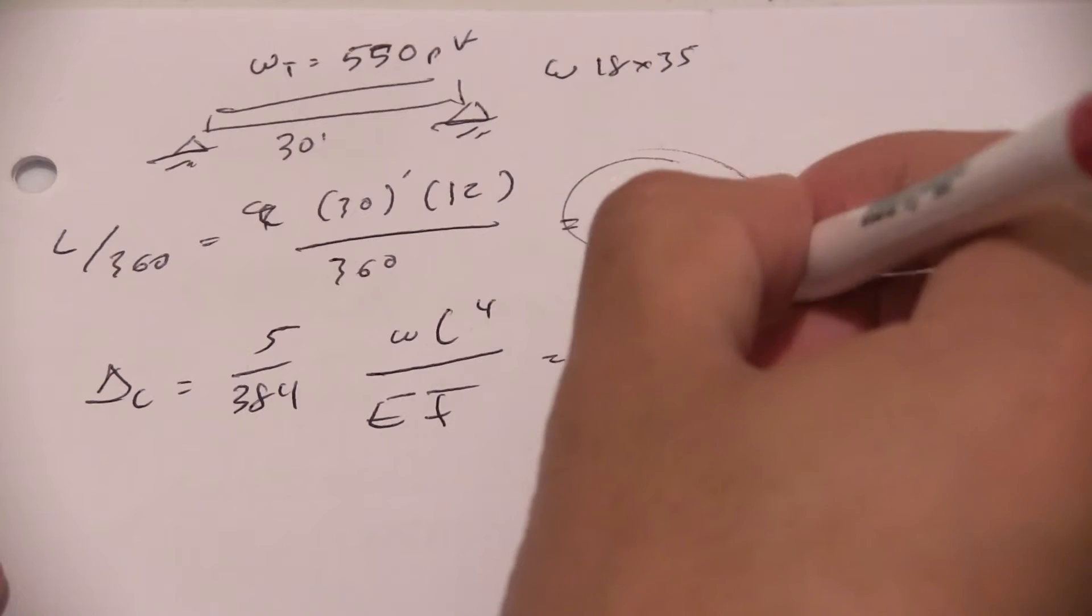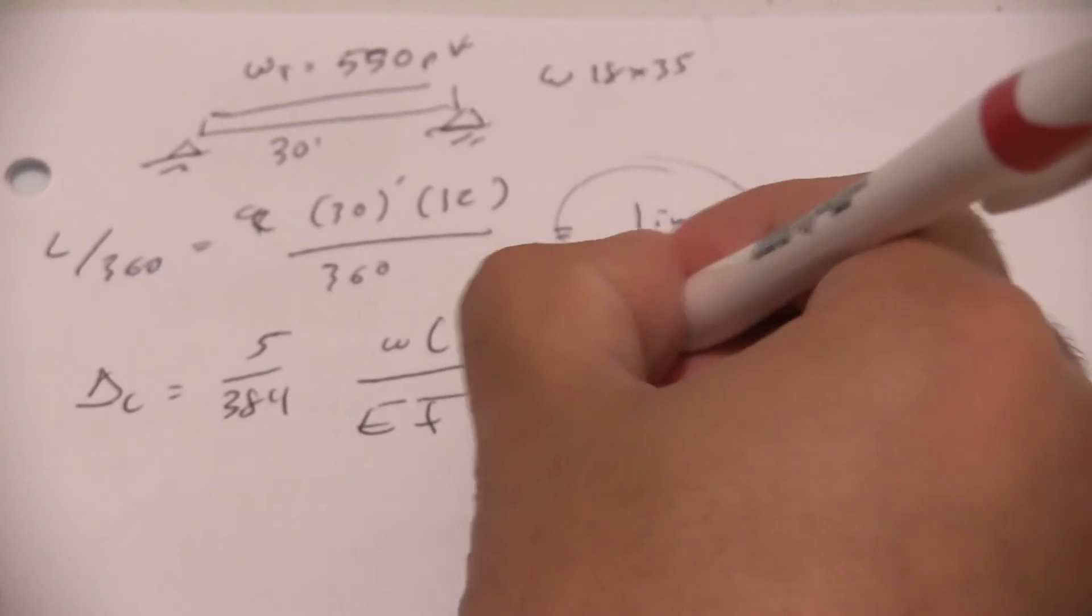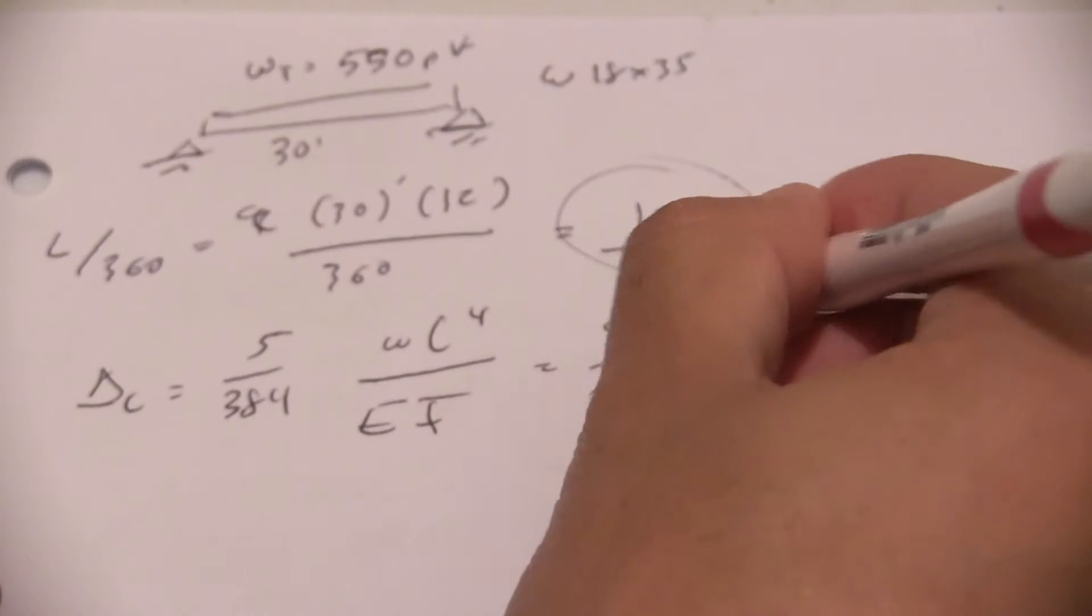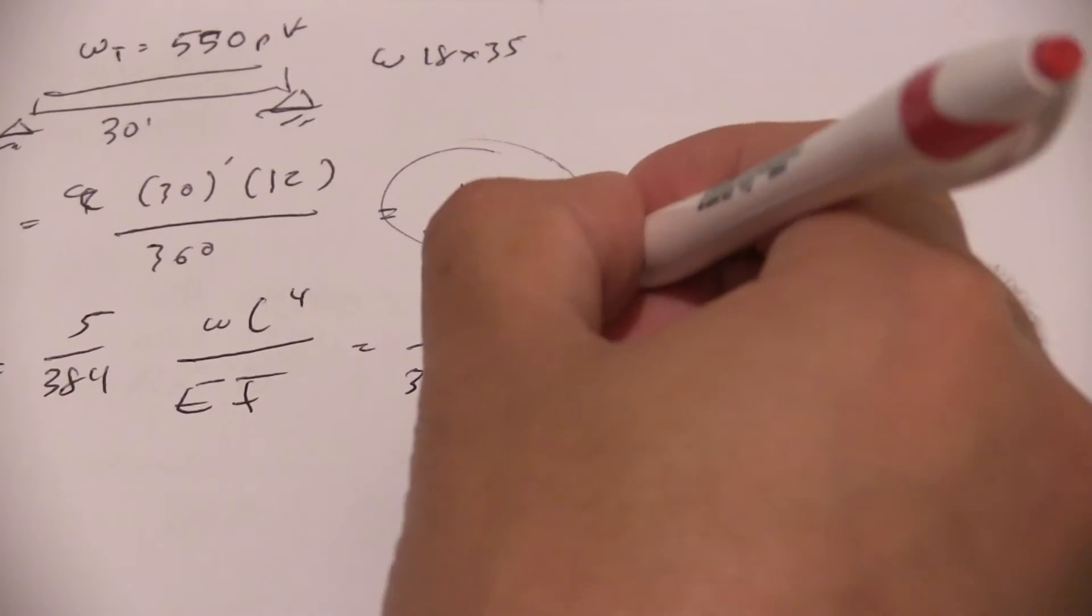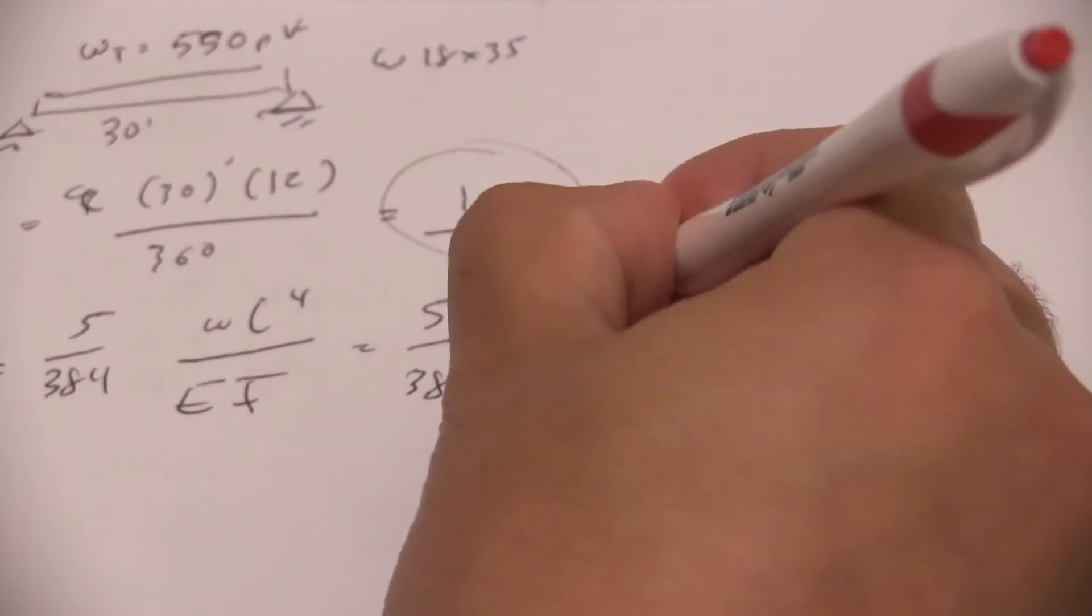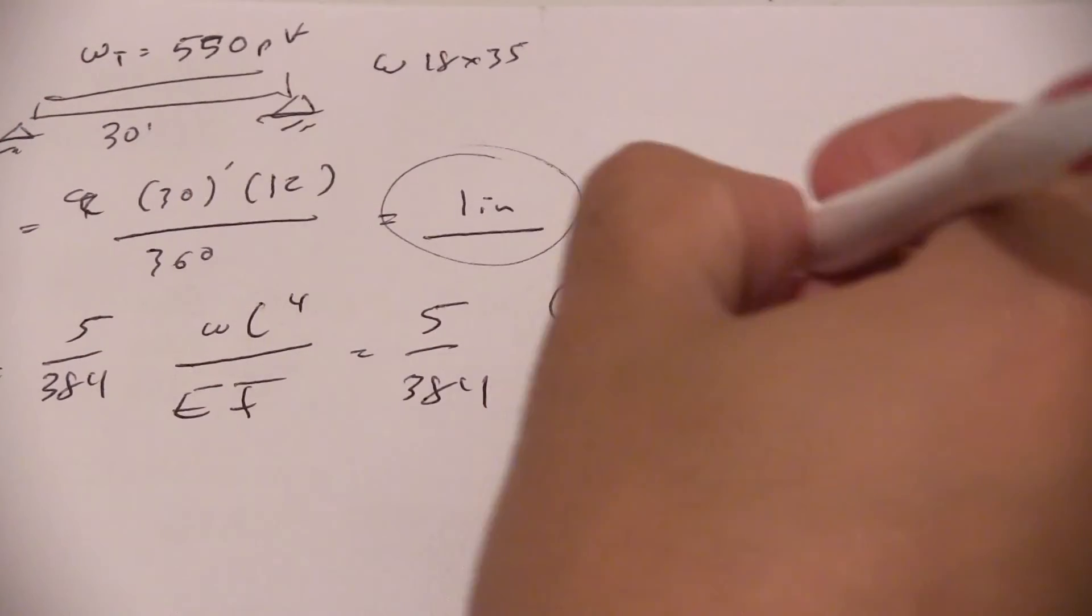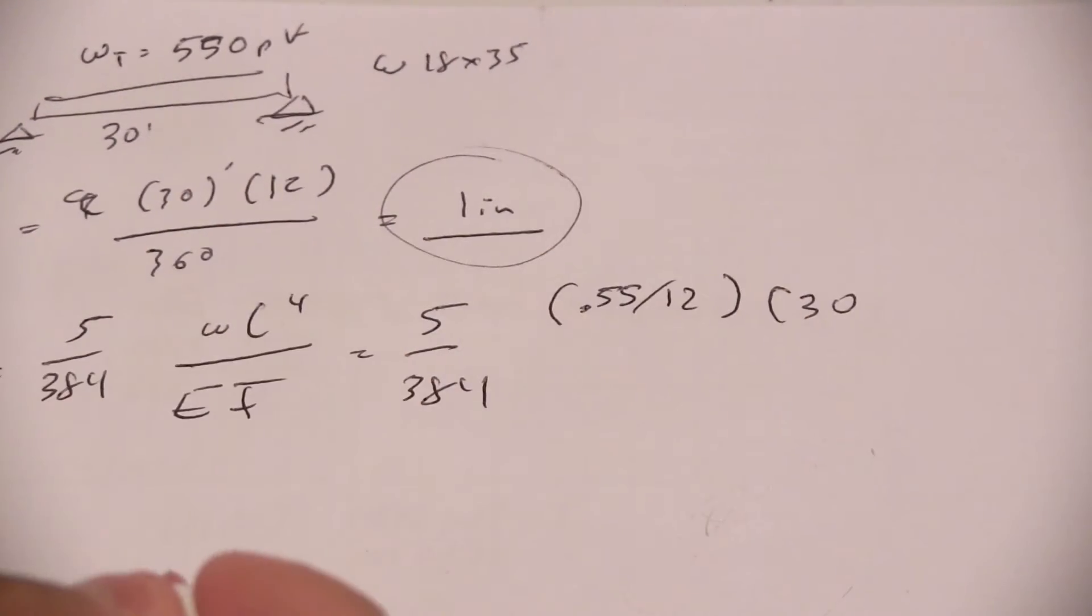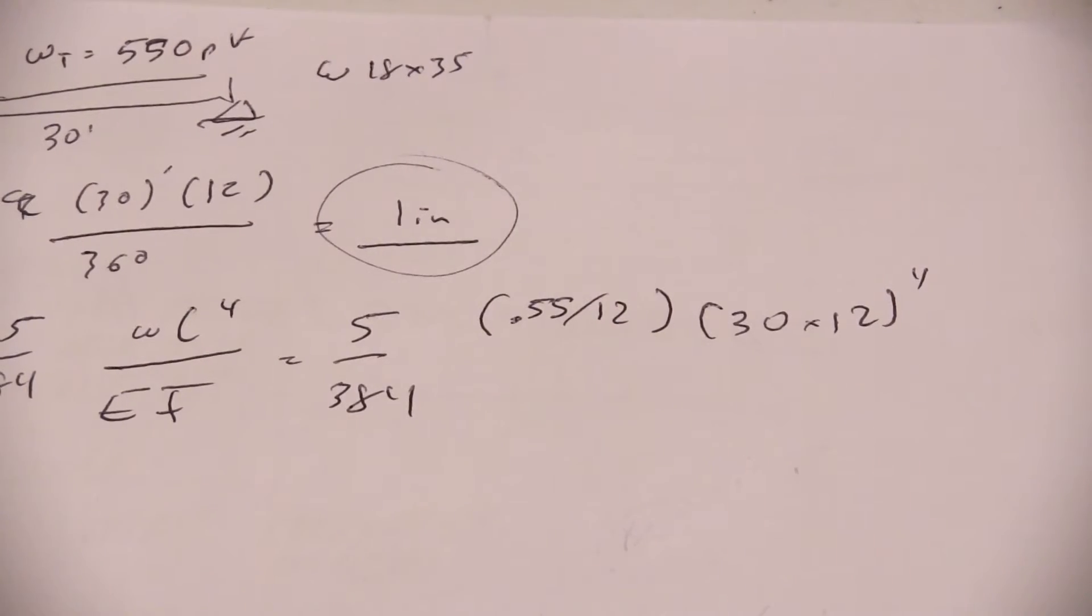Now our W, we are going to convert it into kips. It will be 5 over 384 times 0.55 kips, we're going to divide it by 12 to make it into inches, we're going to multiply it by the length 30, we're going to multiply it by 12 to make it into inches and raise it to the 4th power.